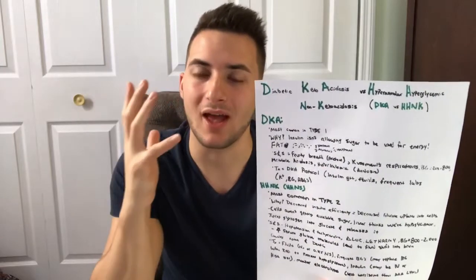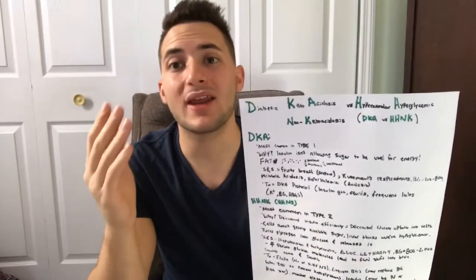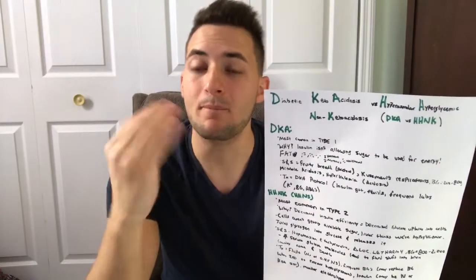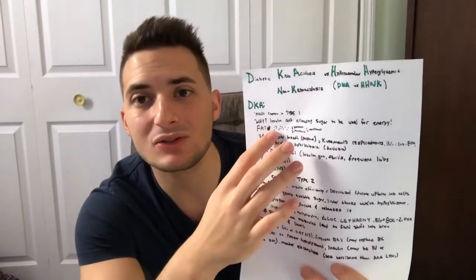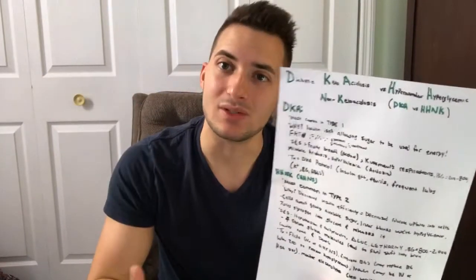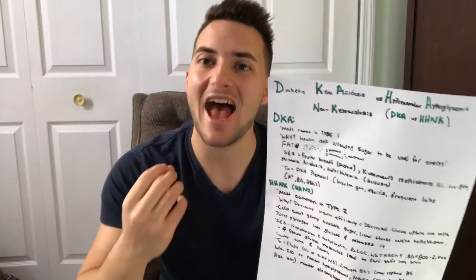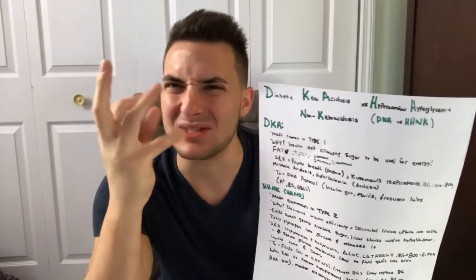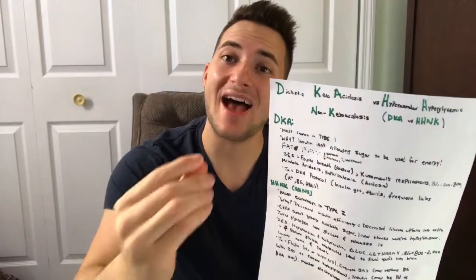...the body is starving and trying to find a way to make energy. Where does the body go? It goes to its own fat and breaks it down to produce energy. But there is a byproduct from this fat breakdown. Fat breaking down — what's the byproduct? Energy and ketones. And ketones are acid — they make the body acidemic. So they go into a state of acidosis because of these ketones, and these ketones cause them to have diabetic ketoacidosis.